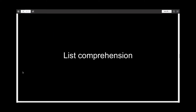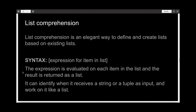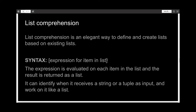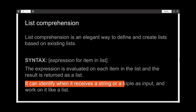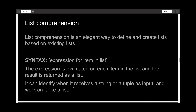Now let's talk about list comprehension. List comprehension is a very elegant way to define and create lists which are based on existing lists. The syntax is open square brackets with the expression inside, and the part 'for item in list' is very important — otherwise it won't be a list comprehension at all. The expression is evaluated on each item in the list and the result is written as a list. The clever thing is that list comprehension can detect when it receives a string or a tuple as input and not a list, but it will also work on it like a list and won't give any error.